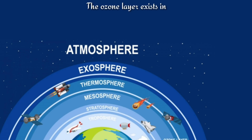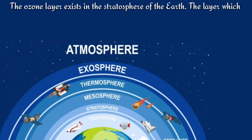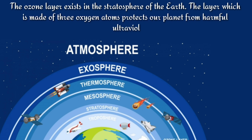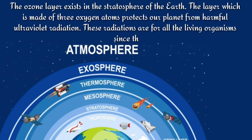The ozone layer exists in the stratosphere of the earth. The layer, which is made of three oxygen atoms, protects our planet from harmful ultraviolet radiation. These radiations are harmful for all living organisms since they cause allergies and skin cancer.